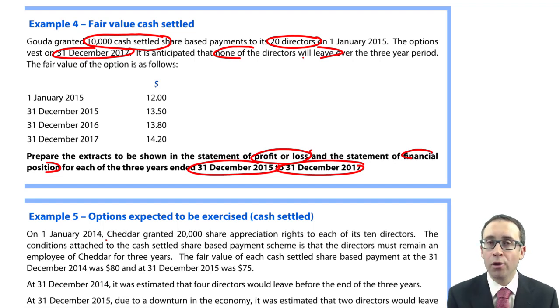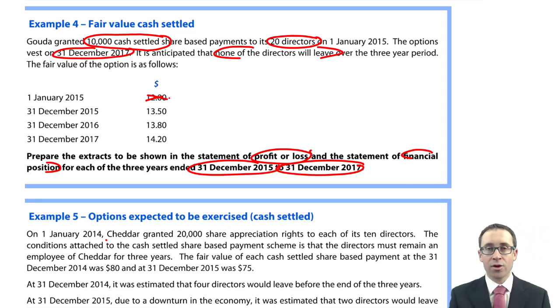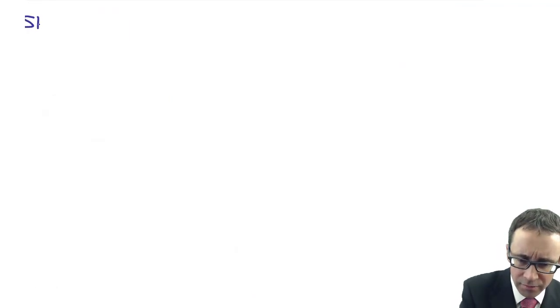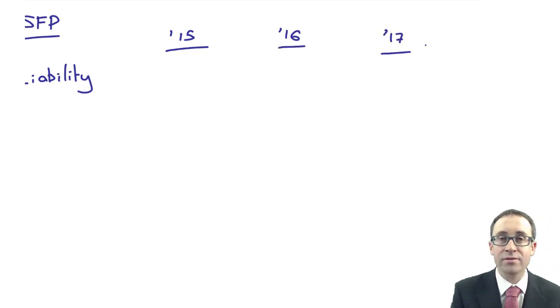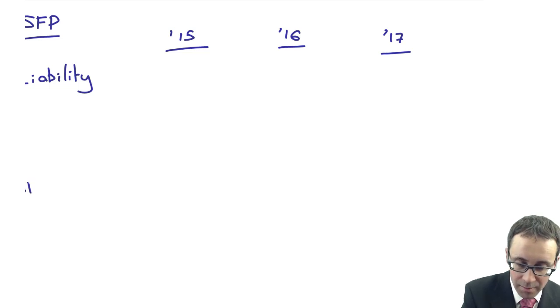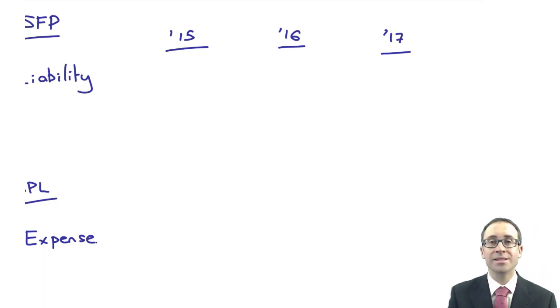The fair value of the option, so that's important now. As it is cash-settled, we ignore the fair value at the grant date and we look at the fair value at each reporting date, so $13.50, $13.80 and $14.20. If we think about the statement of financial position, remember on the SFP we are looking to record a liability for the next three years as '15, '16 and '17. We then need to think about the statement of profit or loss, whereby we record the movement and that movement usually results in an expense.